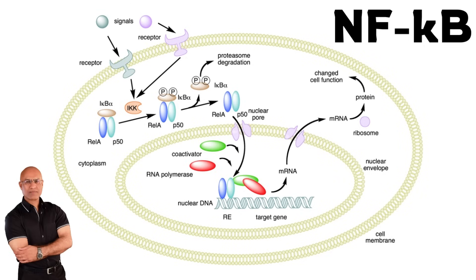Step number 1: stress to the cell. Step number 2: stress-recognizing receptor system is activated and signal transduction occurs. Those signals cause phosphorylation of the NF-kappa B inhibitors — the monkeys holding the banana. When the NF-kappa B inhibitors are phosphorylated, they are destroyed. When the monkey is destroyed, the banana — NF-kappa B — is released and set free. When it is no longer inhibited, it shifts from the cytosol through the nuclear pores into the nucleoplasm.